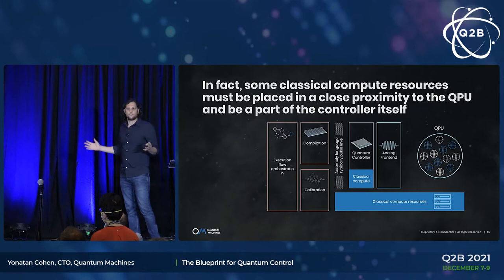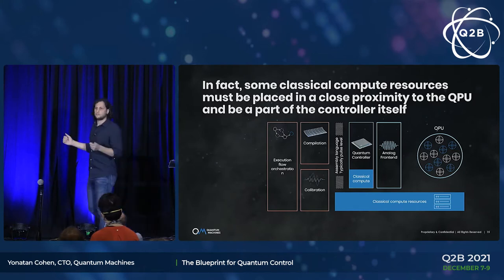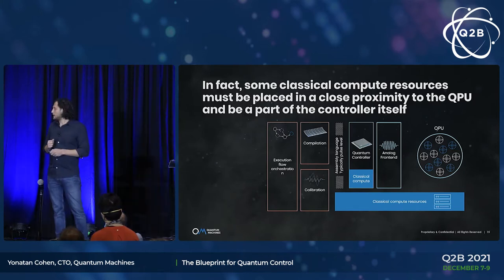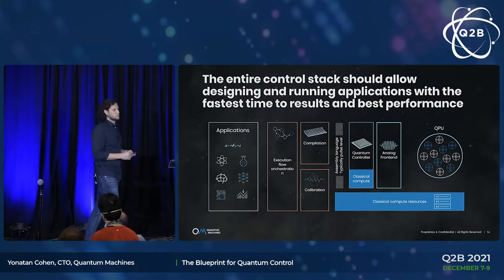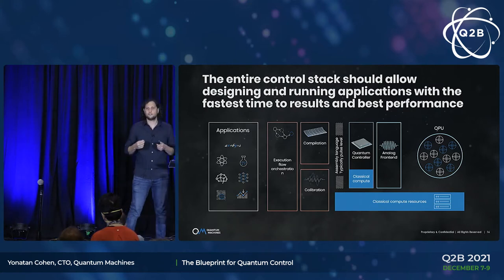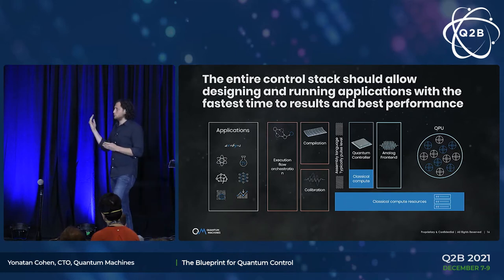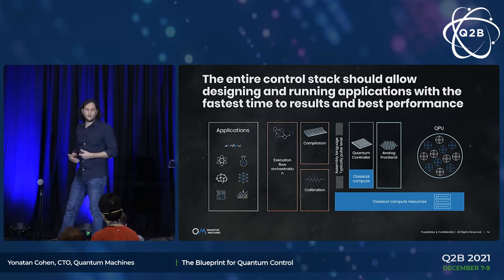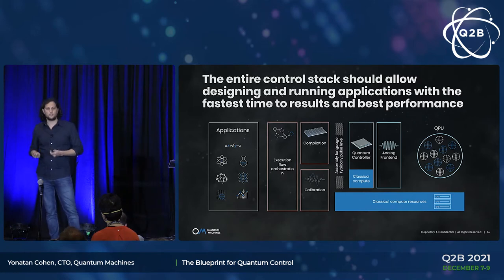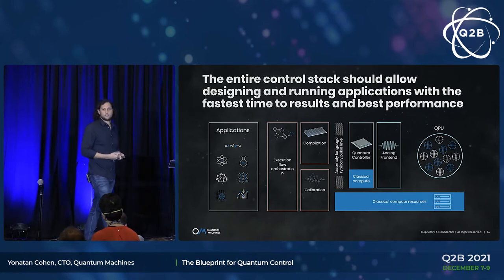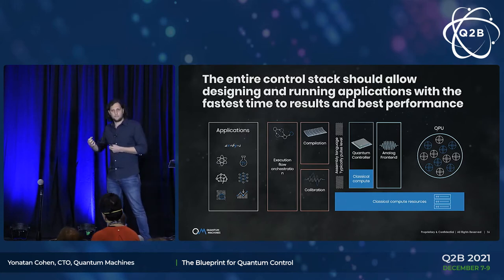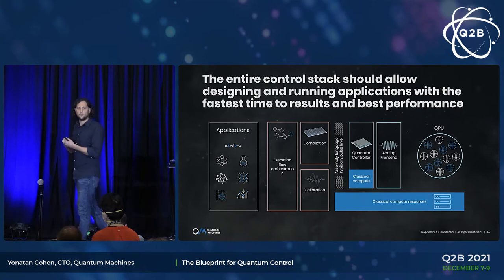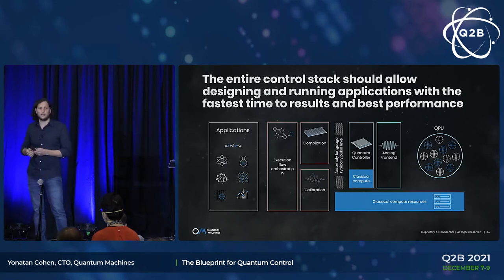That's generally the quantum control stack. On top of this we have the application layer. The ultimate goal of the quantum control stack would be to allow application developers to design and run applications with the highest productivity, achieving the most performance out of the underlying QPUs and also the underlying classical processing.